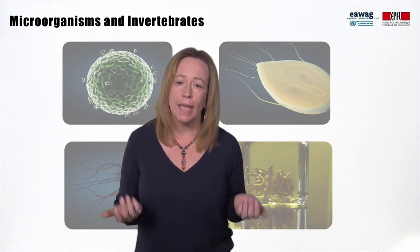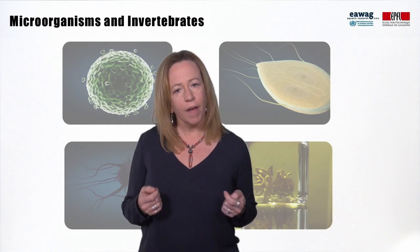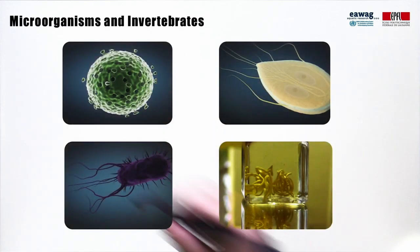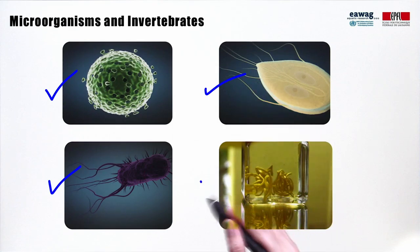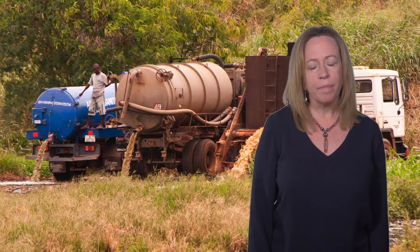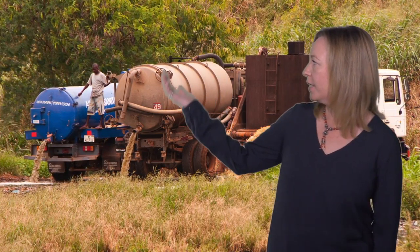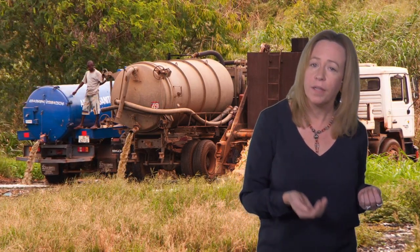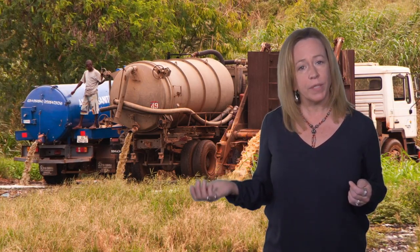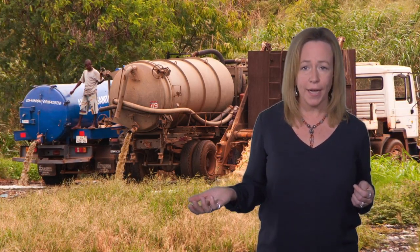Microbes also release gases and other byproducts that can affect the environment. Here we see viruses, bacteria, protozoa, and invertebrates. The biodegradable organic matter in fecal sludge varies depending on the source, but usually needs to be stabilized prior to final end use or disposal. Stabilization involves the degradation of readily degradable material, leaving behind more stable, less degradable organics.